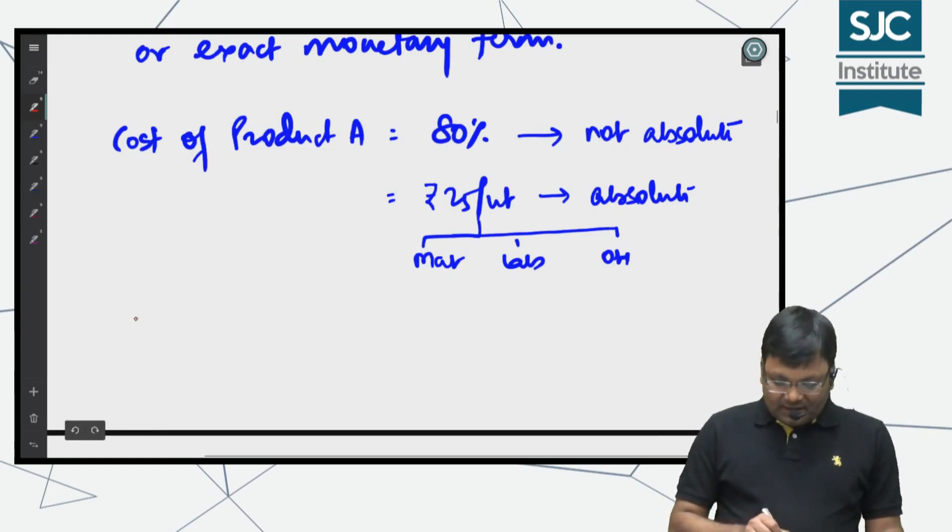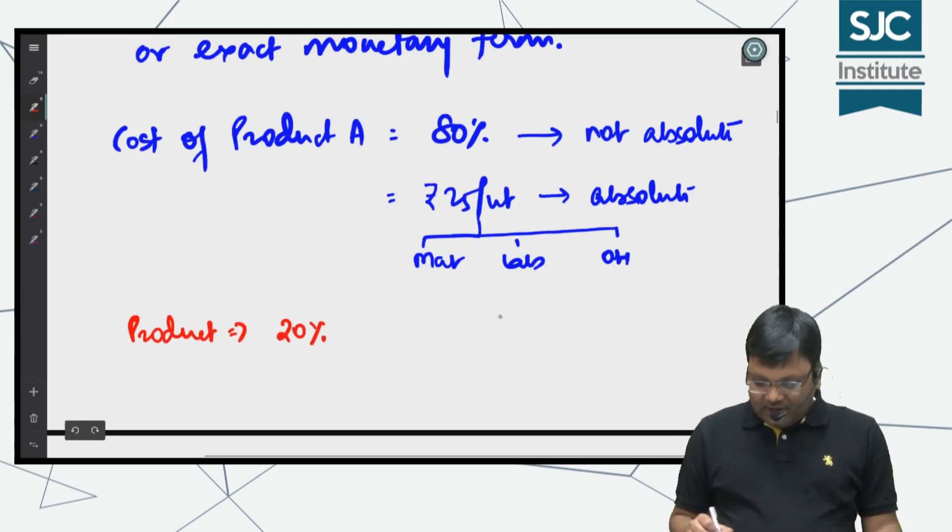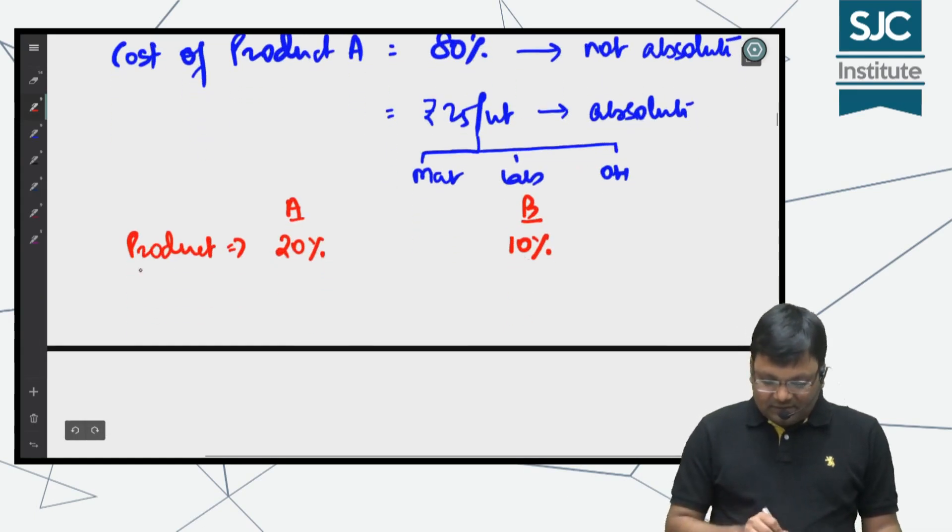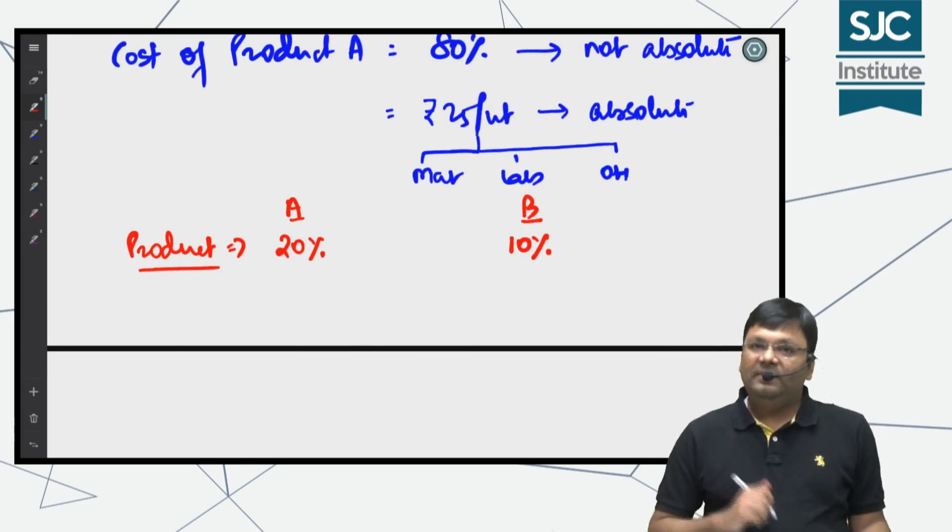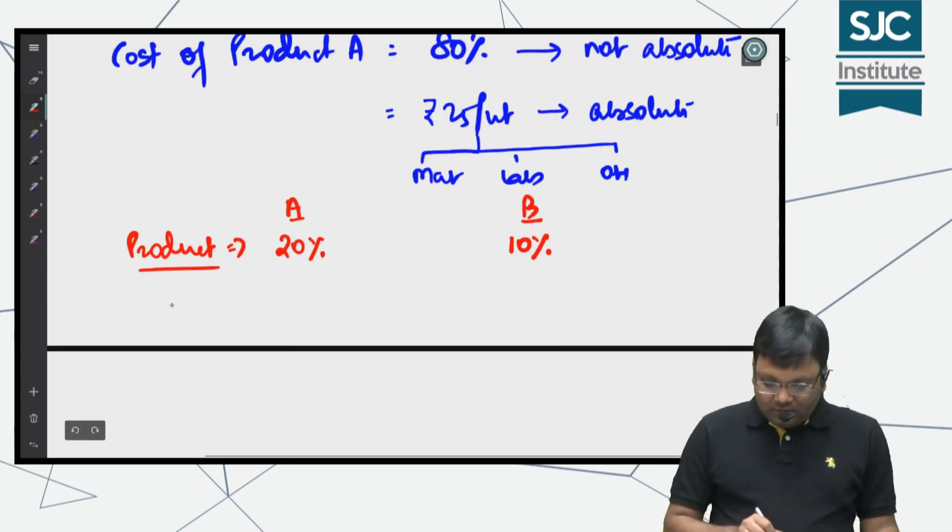Say there's a product with profit—this is Product A—and this is Product B. It sounds like Product A has more profit, right? But percentages are usually misguiding. Say Product A has 20% profit on cost, and Product B has 10% profit on cost.